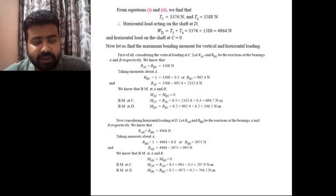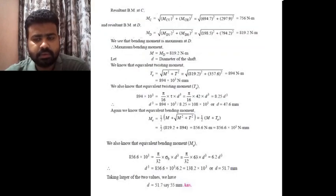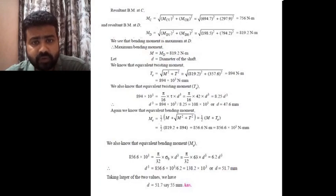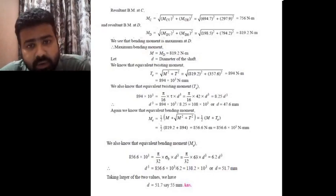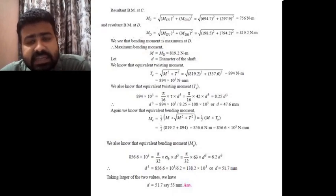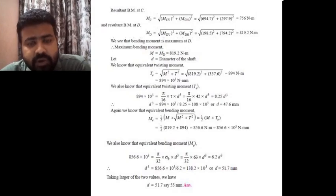Now let us find the resultant bending moment at points C and D. The resultant bending moment at C is MC = √(MCV² + MCH²). Substituting MCV = 694.7 N·m and MCH = 297.9 N·m, the resultant MC comes out to be 756 N·m. Similarly, the resultant bending moment at D is MD = √(MDV² + MDH²). Substituting the values, MD comes out to be 819.2 N·m.